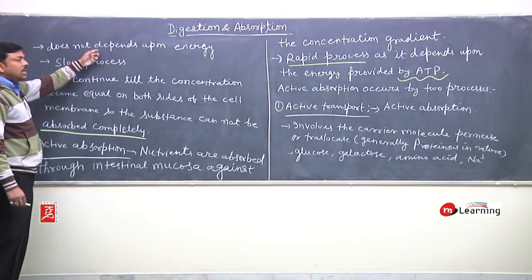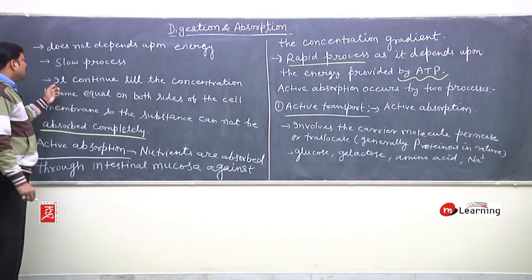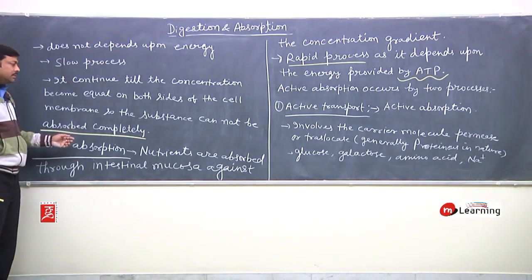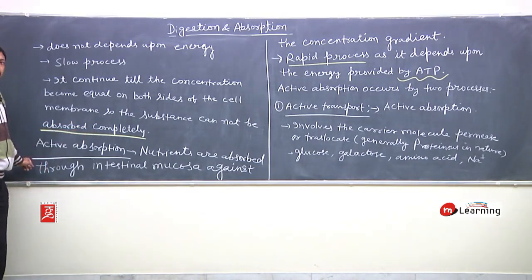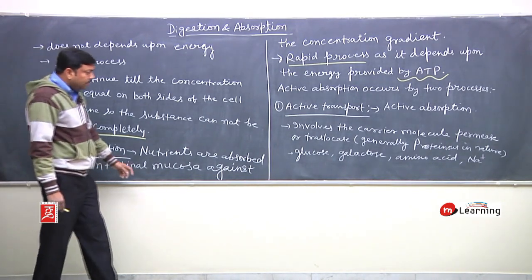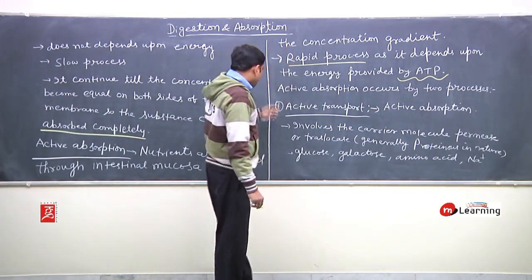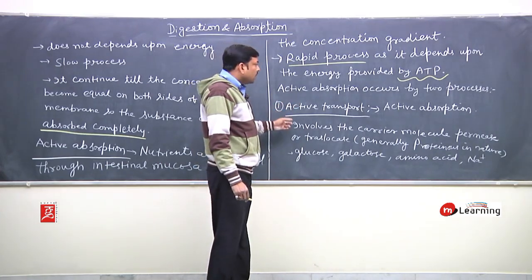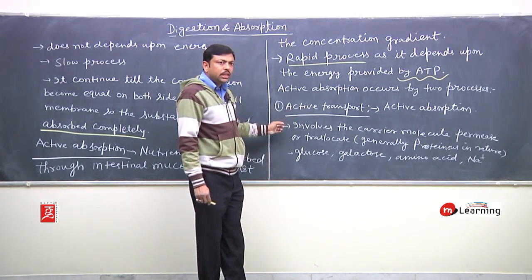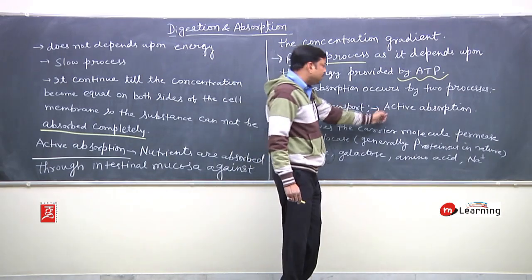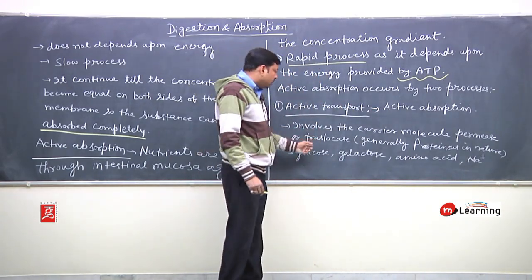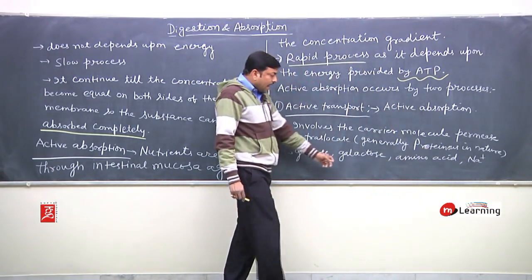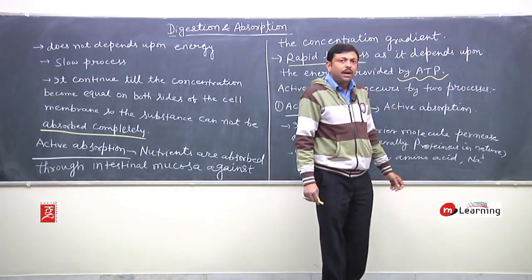Passive transport does not depend upon energy. Passive transport is a slow process, but it continues until the concentration becomes equal on both sides of the cell membrane, so substances cannot be absorbed completely. In active absorption, nutrients are absorbed through the intestinal mucosa against the concentration gradient. Active absorption is a rapid process as it depends upon the energy provided by ATP. In active transport, carrier molecules like permease and translocase are involved; these are generally proteinous in nature. Glucose, galactose, amino acids, and sodium ions are absorbed by active transport.